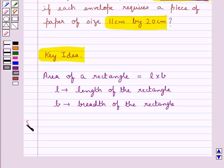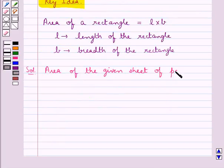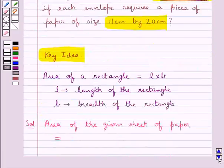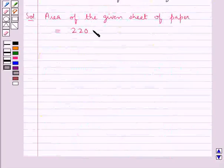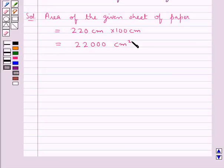Now let's see the solution for this question. First of all we will find out the area of the given sheet of paper. This is equal to 220 cm multiplied by 100 cm, that is 22,000 cm square, which is the area of the given sheet of paper.